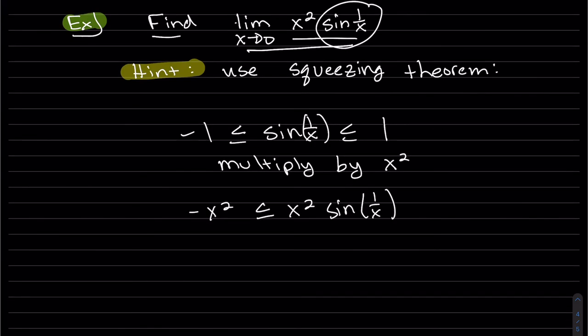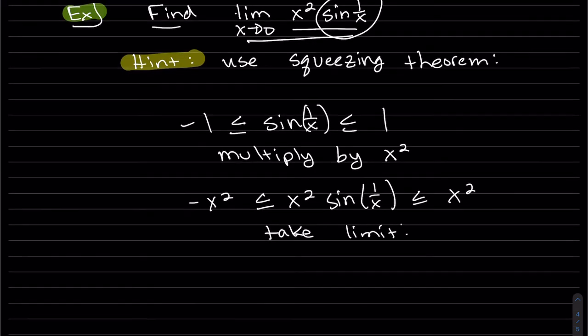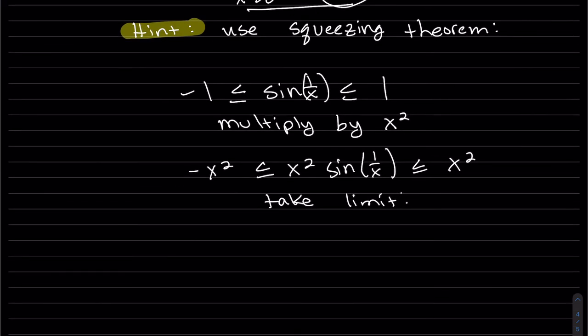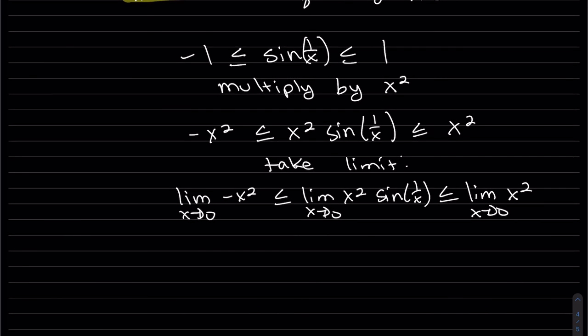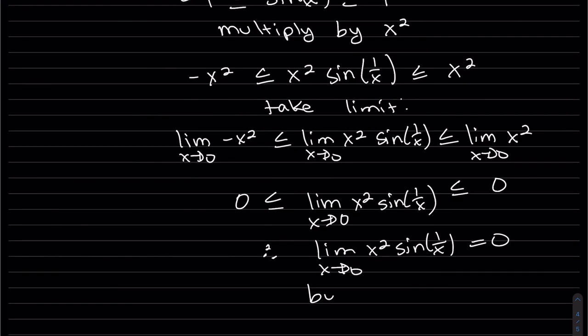Now I'm going to multiply through by x², and we can do that since x² is positive. So we're kind of building that limit that we want. Now we're going to take the limit, and of course it's as x goes to 0. And we can see when we plug in, those are just polynomials. We can plug it in, and we have squeezed the limit that we're looking for between two of the same values. And that's by the squeezing theorem.